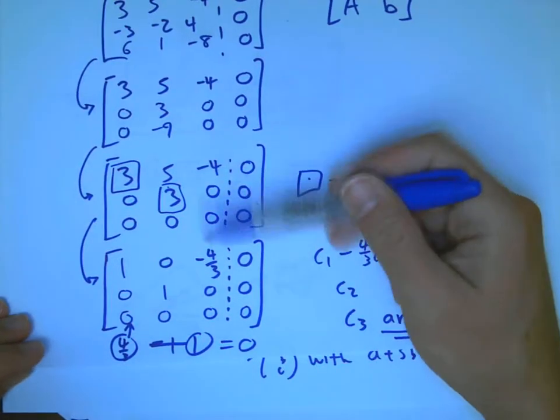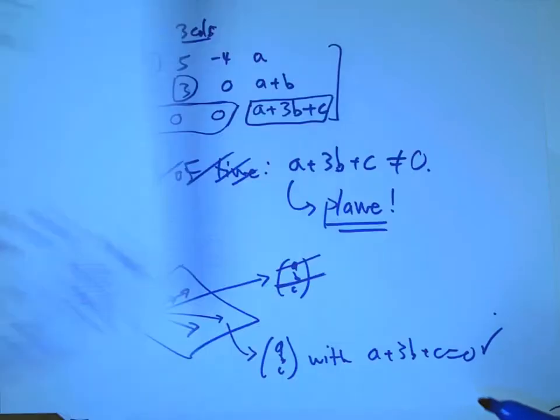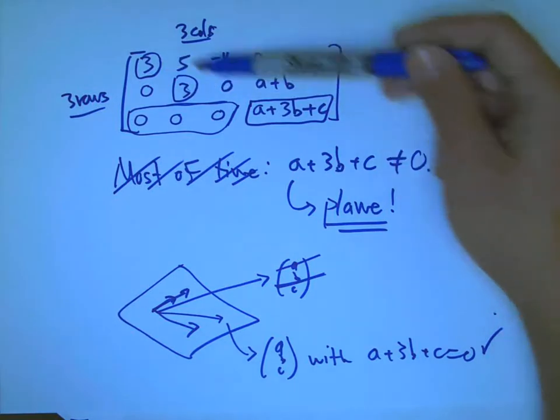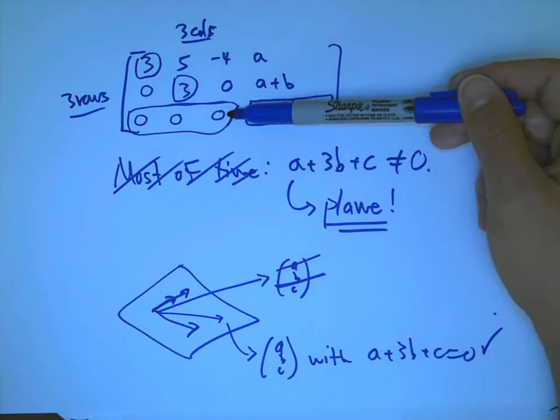The fact that I had only two pivots out of three columns was really significant back here because that was what made this variable free, gave me non-zero solutions, and told me that these were linearly dependent. Some of them were redundant. I could play them off against each other and get zero.